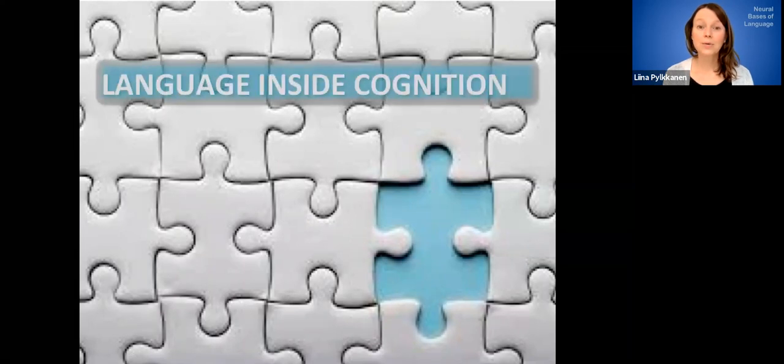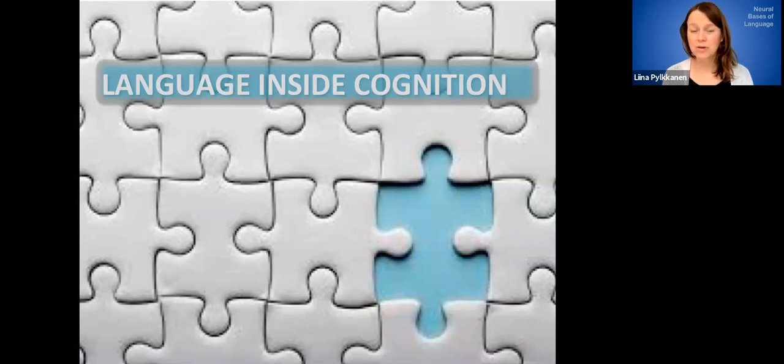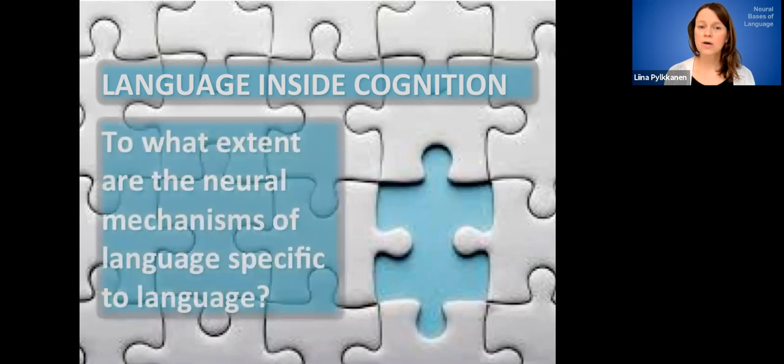Okay, so language, of course, does not sit in our brains by itself. It very much exists in the context of the rest of cognition. So now I want to discuss the question of the extent to which the neural mechanisms of language are specific to language, as opposed to maybe to some extent shared with other cognitive domains.